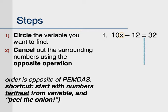Now let's look at problem number one. If x is the center of the onion, then 10 is closer — it's the inside layer — and 12 is farther away, so the 12 is the outside layer; you have to peel it away first. The opposite of minus 12 is plus 12, so that would cancel it out. Whatever you do to one side of an equation, you must do to the other side, so write plus 12 on both sides. You want to keep your equation balanced.